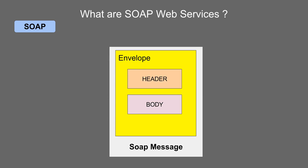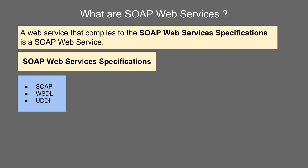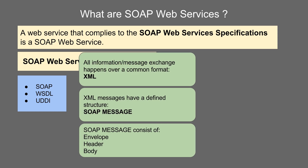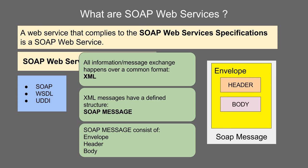To summarize: SOAP web services are web services that comply with SOAP web services specifications, which are guidelines laid down by W3C. The basic set of specifications include SOAP, WSDL, and UDDI. SOAP is a protocol which defines how two applications will talk to each other using a common XML format, and that XML must follow the SOAP message standard consisting of an envelope, header, and body. In the next session, we will go deeper into more concepts of web services. Thanks for watching.